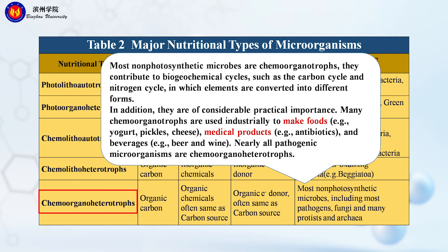In addition, chemo-organoheterotrophs are of considerable practical importance. Many are used industrially to make foods such as yogurt, pickles, and cheese, and also medical products such as antibiotics, and beverages such as beer and wine. Nearly all pathogenic microorganisms are chemo-organotrophs.